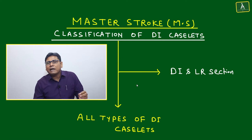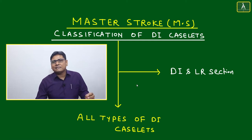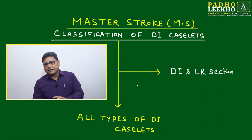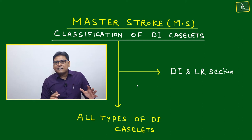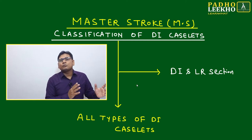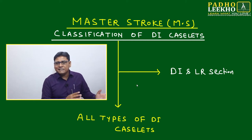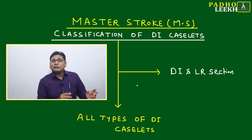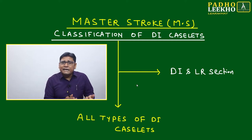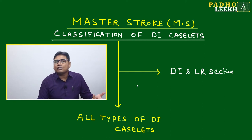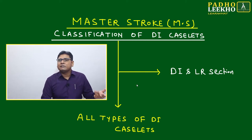To tackle all three parameters together, we have to address two challenges. The first challenge is how to classify the DI caselet — almost all caselets are based on certain mathematical concepts or data representation. First we categorize them, then for every category we will develop mathematical and logical tools to handle any level of questions.